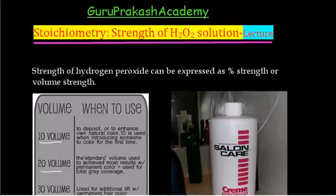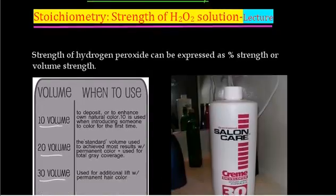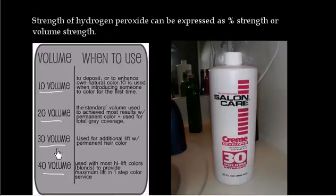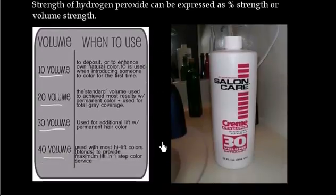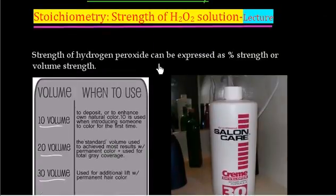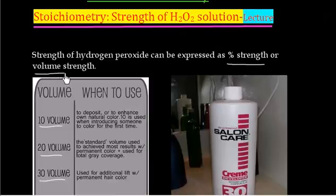In this lecture we will discuss the strength of H2O2 solution. If you look at a bottle of H2O2 solution, you can see it is written '30 volume'. Generally the strength of H2O2 solution is expressed in terms of volume — sometimes 10 volume, 20 volume, 30 volume, or 40 volume. This strength expressed in terms of volume is called volume strength.